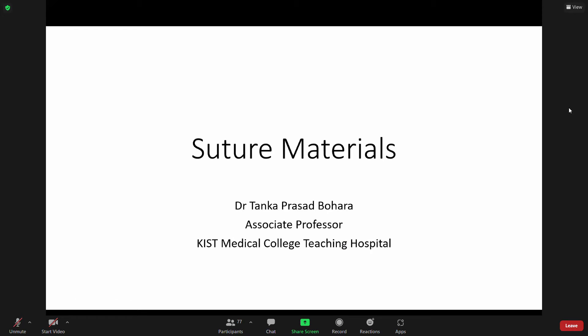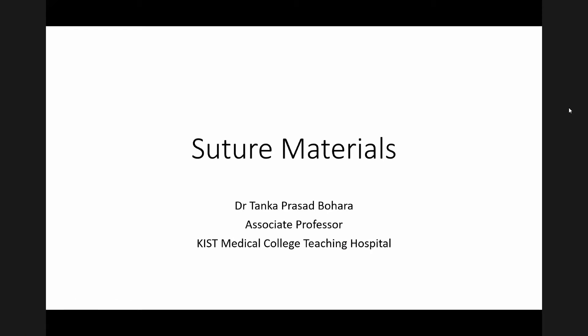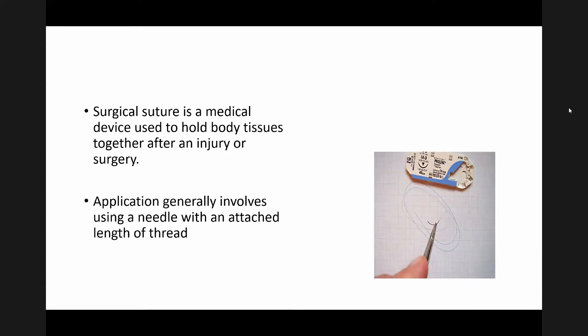Surgical sutures or suture materials are devices that are used to hold body tissues together after an injury or surgery. This application generally involves using a needle with an attached length of thread.